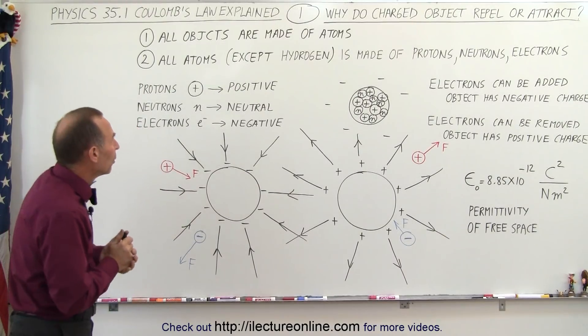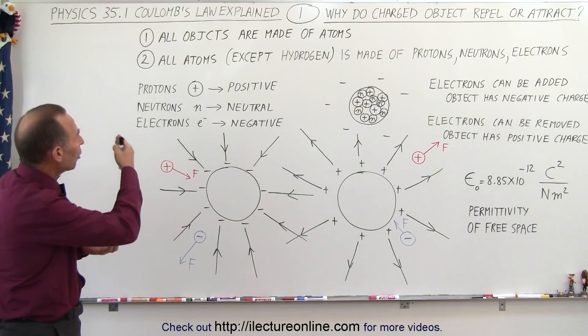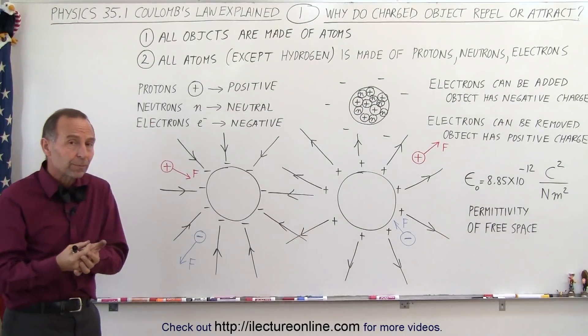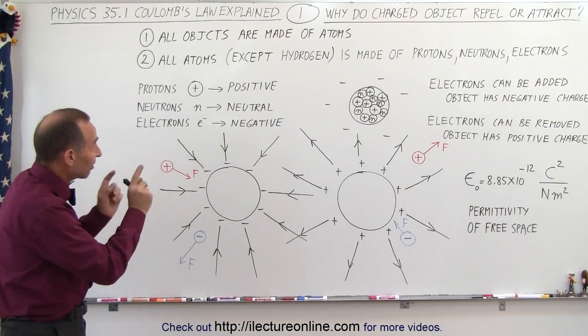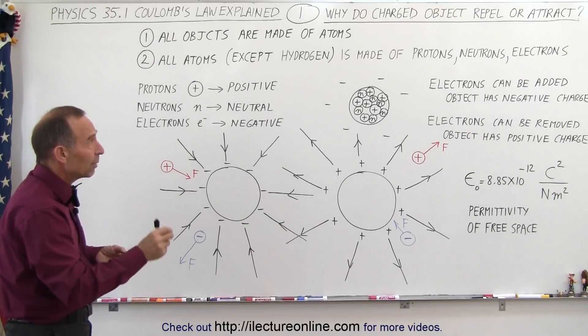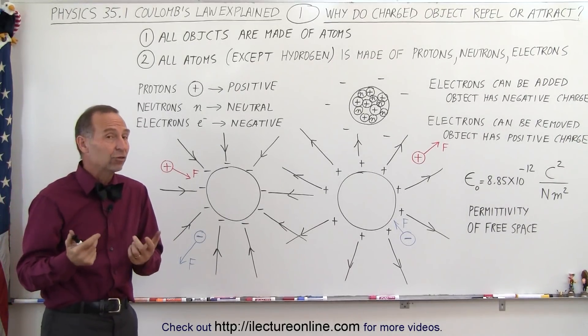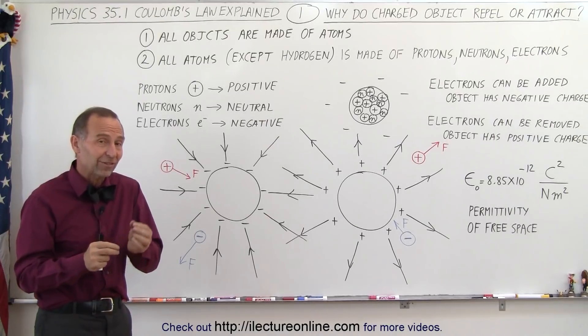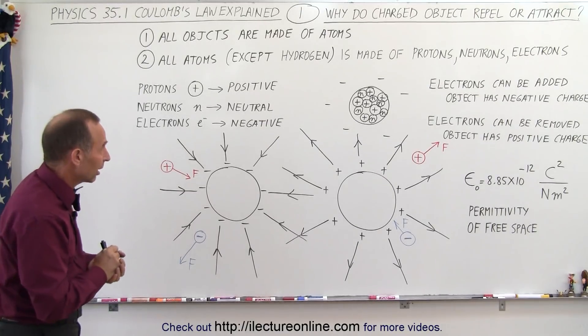But why is that? Well, first of all we have to realize that all objects are made of atoms and it turns out that all atoms, except for hydrogen, are made up of protons, neutrons, and electrons. Hydrogen doesn't have any neutrons, it just has a single proton and a single electron.